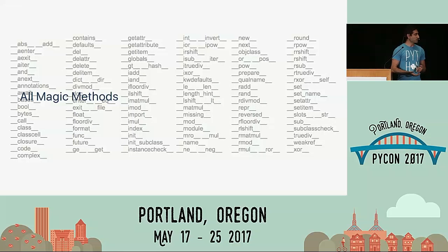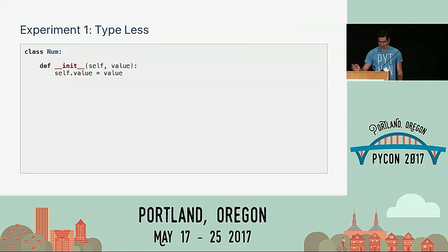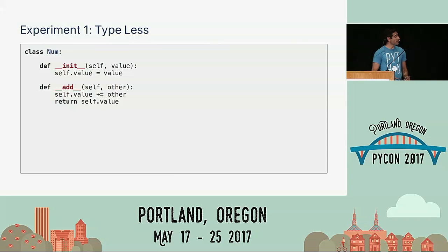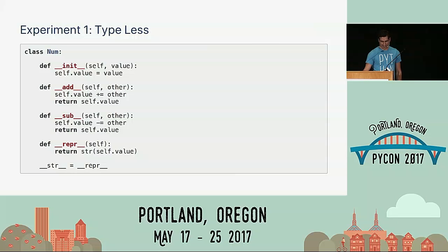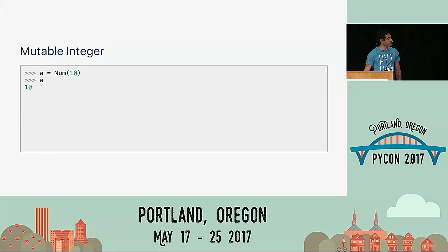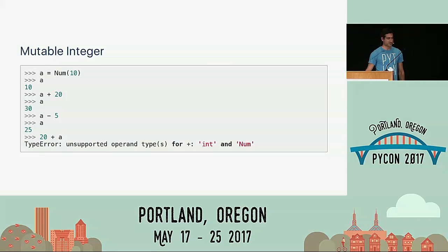A lot of them are very intuitive. For example, if you want to do an add operation and override the plus operator, that is done with `__add__`. We start with a mutable integer class called `Num`, put the value in `self`, and use `__add__`, which adds the value of the other object to your current value and returns it. We also add `__sub__` for subtraction and `__repr__` for representation. If you initialize A as 10, then `A + 20` gives 30, `A - 5` gives 25. But `20 + A` — oops — you get a type error.